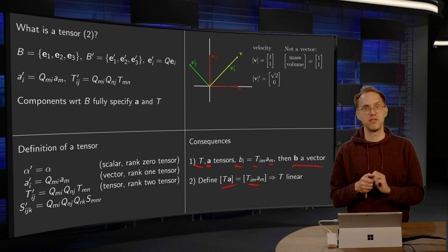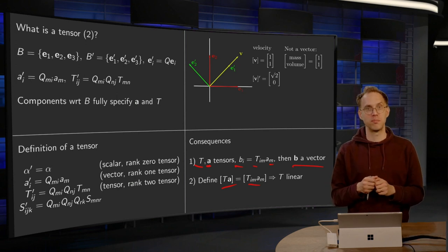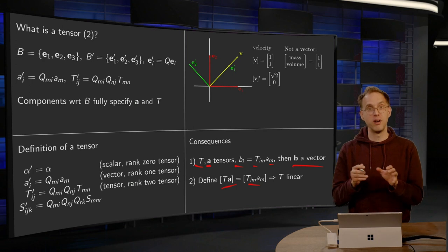we know that we can specify the tensor-based components using the normal matrix vector product, which is linear. We now know that T times a is indeed a linear operation.